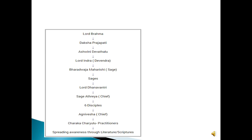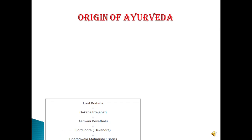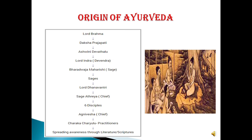Let us see how Ayurveda was originated, that is Ayurveda Avatrana. Mainly the knowledge of Ayurveda came from Lord Brahma. Lord Brahma taught Ayurveda to Daksha Prajapati, who then taught it to Ashwini Kumaras. From Ashwini Kumaras it went to Lord Indra, and Lord Indra taught Ayurveda to Bharadvaja Maharshi. Many sages and Sampradayas followed, like Atriya Sampradaya and Dhanvantri Sampradaya, and the three main Brihatras were established: Charaka Samhita, Shushruta Samhita, and Ashtangahridaya.